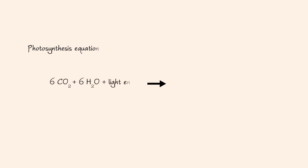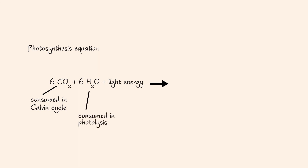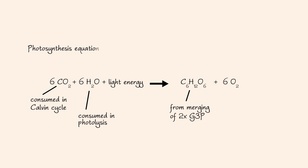Now let's re-discuss the photosynthesis equation. Carbon dioxide and water are the reactants of photosynthesis. Carbon dioxide is consumed during the Calvin cycle, and water is consumed during photolysis of the light-dependent reaction. The products of photosynthesis include glucose and oxygen. Glucose is generated by merging 2 G3P molecules, and oxygen is produced as a byproduct of photolysis.